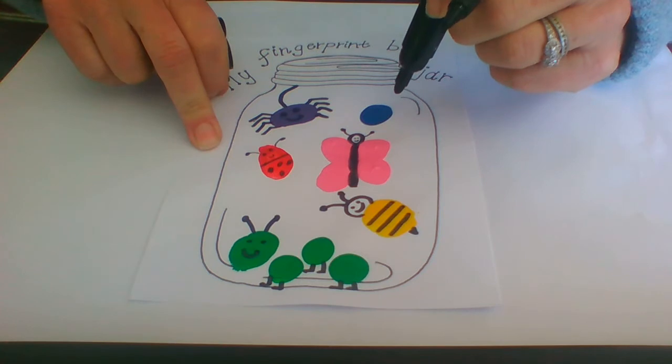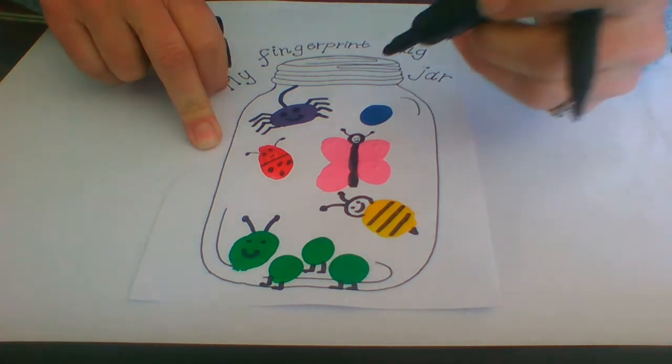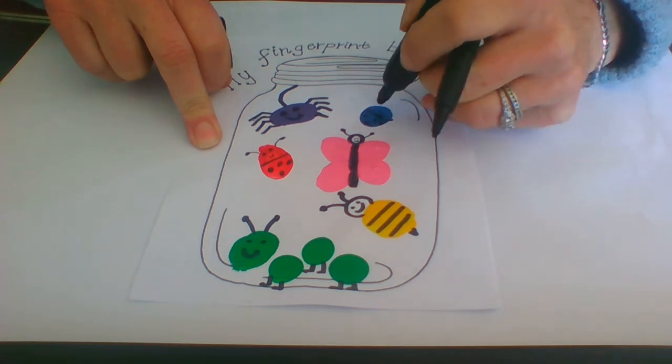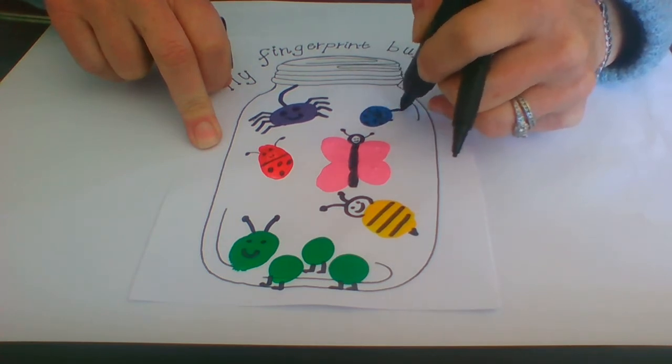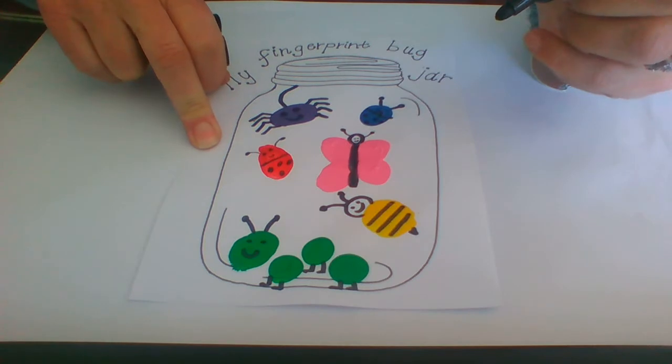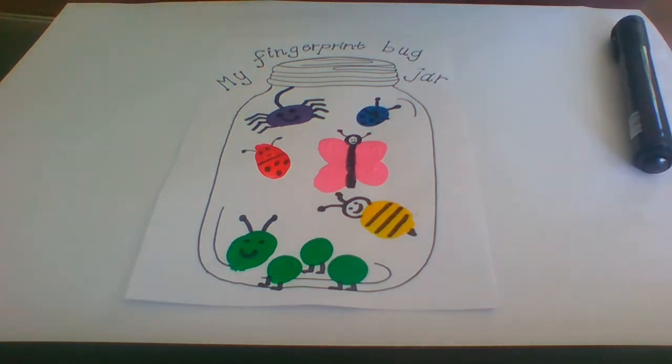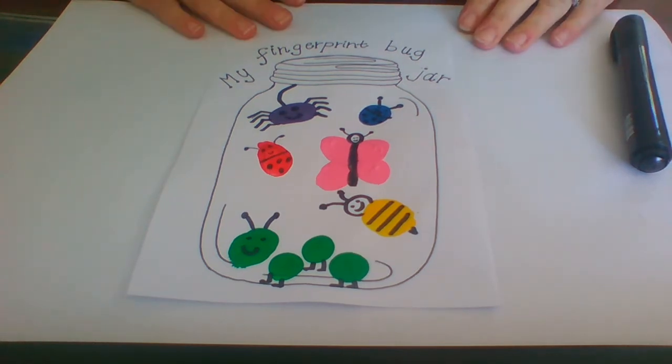And then this guy here, you could make him anything. What could we do with him? We could also make him a different colored ladybird, maybe. You can just have fun and create your own bug jar using whatever colors you want and making whatever little bugs that you feel like.